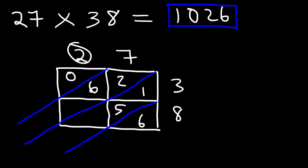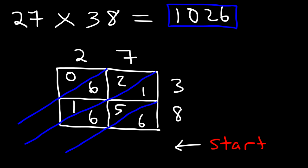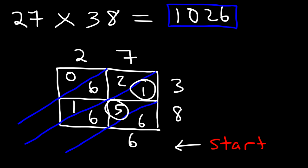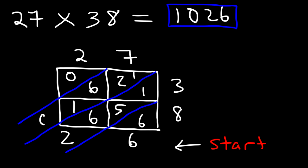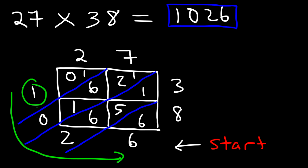Now add up the numbers confined by each diagonal band. In the first region we just have 6. Next: 1 plus 5 plus 6 is 12 — write 2, carry the 1. Then 1 plus 2 is 3, 3 plus 6 is 9, 9 plus 1 is 10 — write 0, carry the 1. Finally 0 plus 1 is 1. Reading in order: 1, 0, 2, 6 — that's 1026. That's lattice multiplication.